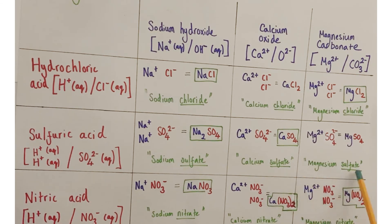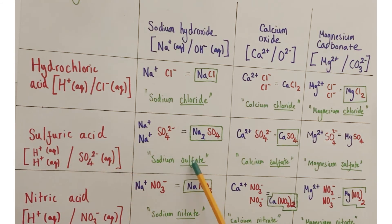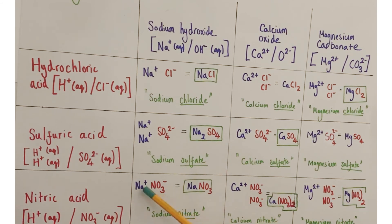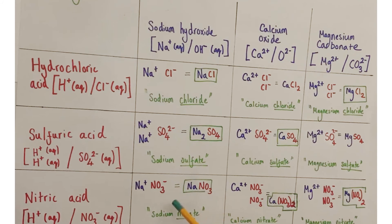The pattern for sulfuric acid: any reaction with an alkali, base, or carbonate forms a sulfate salt. Moving to nitric acid: sodium (Na⁺, +1) with nitrate (NO3⁻, −1) balance perfectly together, giving NaNO3 — sodium nitrate.